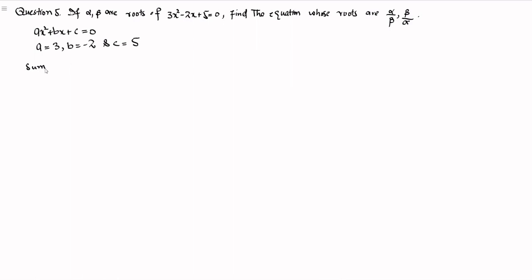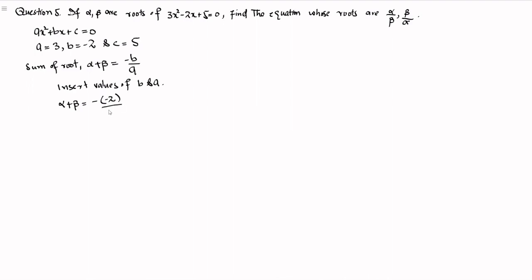Now we know that the sum of roots alpha and beta for this equation is alpha plus beta is equal to minus b by a. Inserting the values of b and a, we get alpha plus beta is equal to minus of minus 2 divided by 3, which is equal to 2 by 3. This is the sum of the roots of the given quadratic equation.